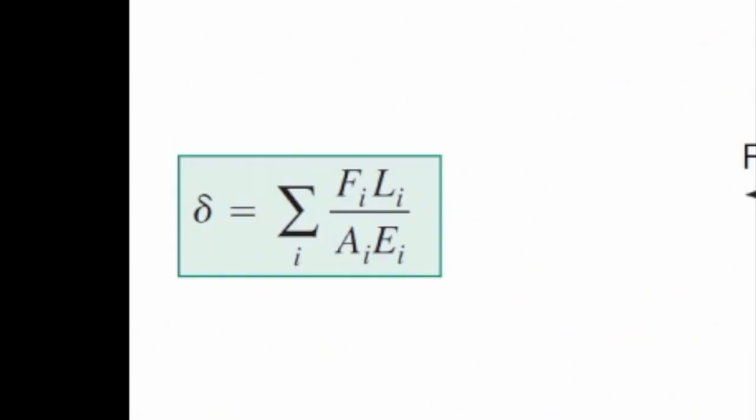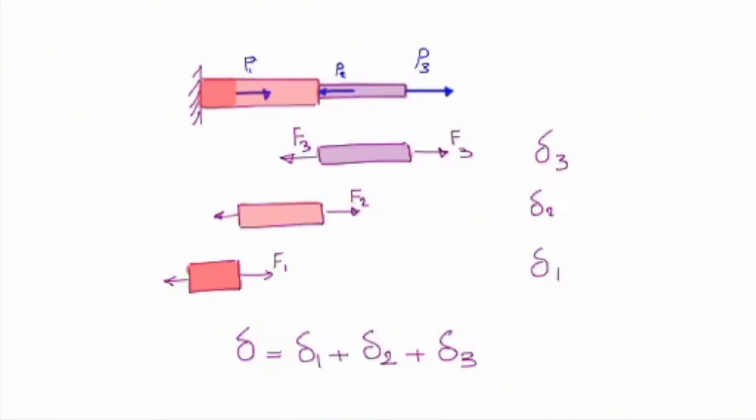We determine delta as the sum of deformation in each bar. An important question is: what is the force within each element — is it P1, P2, or P3? The answer is: always use a free body diagram to determine the internal force. Do not guess. Cut the element, apply external forces, and use the equilibrium equation. In element number two, for example, the internal force is a combination of the applied loads, not simply P2.